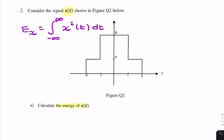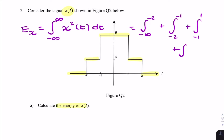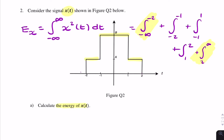We can integrate piecewise from minus infinity across all the different regions. That's the integral from minus infinity to minus 2, plus the integral from minus 2 to minus 1, plus the integral from minus 1 to 1, plus the integral from 1 to 2, plus the integral from 2 to infinity. The first and last segments are zero, so we don't need to include those and can remove them.